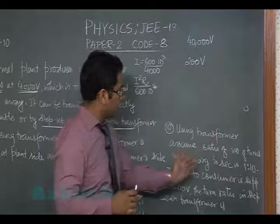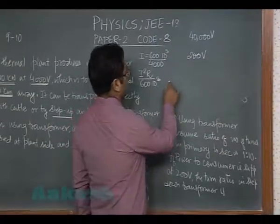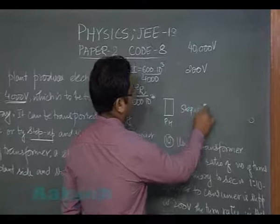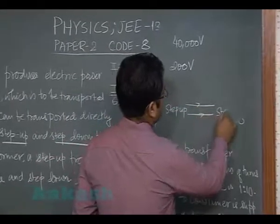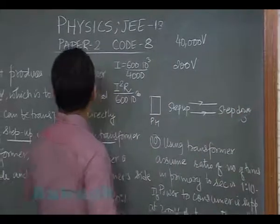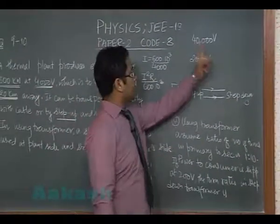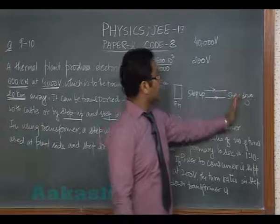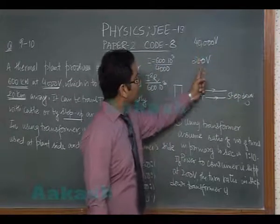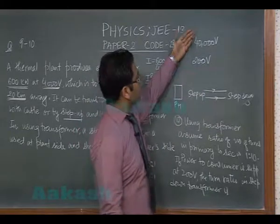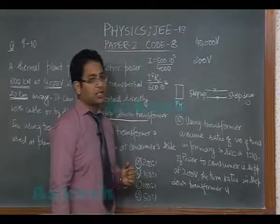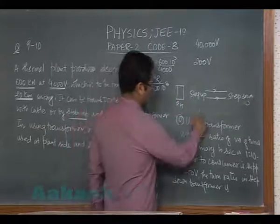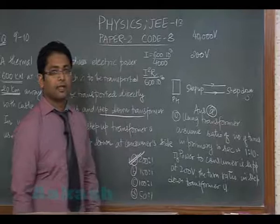That means now we need to give the power to the consumer at 200 volt. The turn ratio in step-down transformer: this is the power house, here is step-up, then it goes to transmission, then here is step-down. So 4000 volt was stepped up to 40,000 and transmitted. At the time of step-down you have to step it down from 40,000 to 200. Primary to secondary voltage gives you the turn ratio, which is 200:1. Question number 10 has answer A.